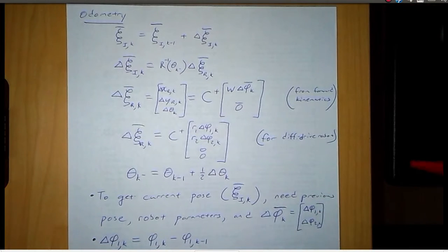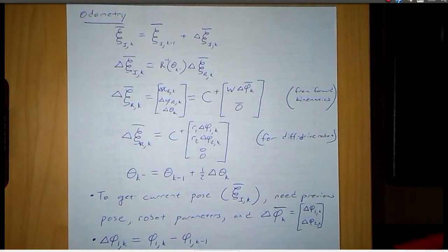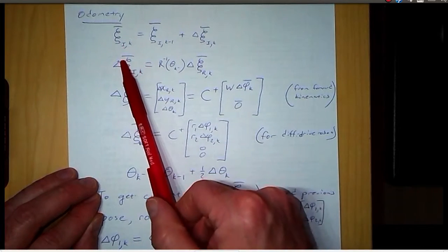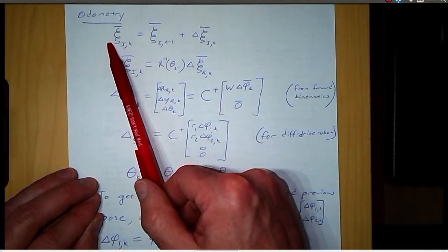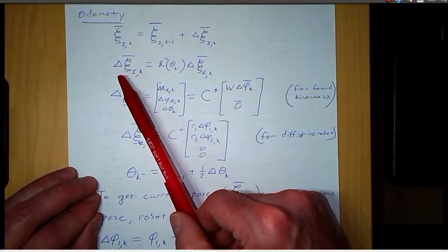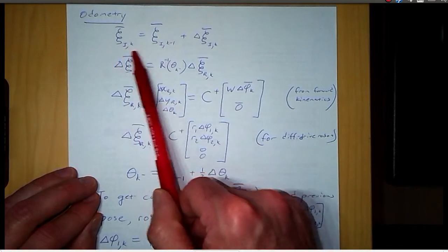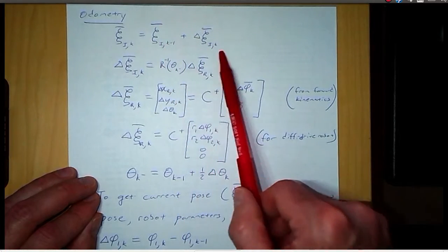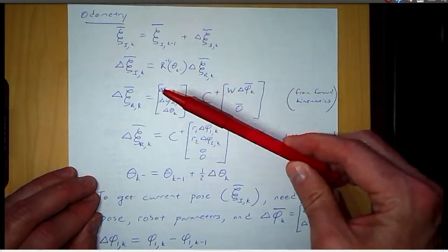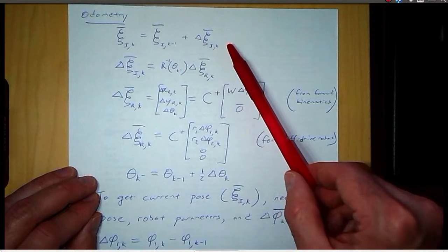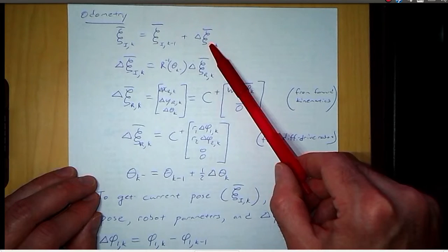Odometry is a means of estimating the robot's Cartesian position based only on changes in wheel angle. The notation we use is the robot's current position in the world frame, psi i, so that's x i, y i, and theta at time k. The relationship we'll use is that the current position is equal to the previous position plus some change. For the odometry problem we're given the previous position, or at least some starting position, and we need to compute the change in the Cartesian coordinates.